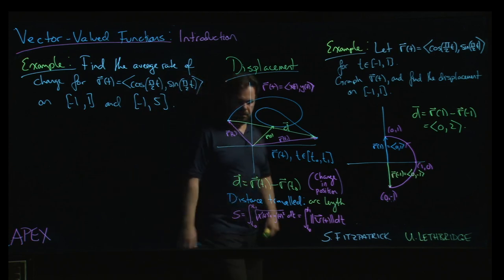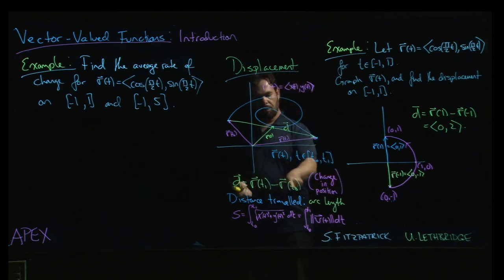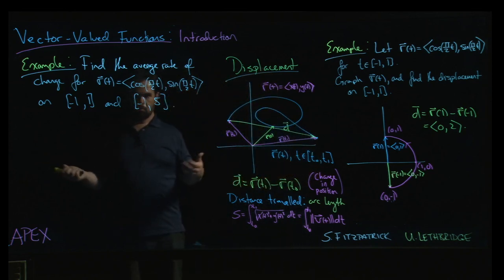Now, what do we mean by average rate of change? We have this concept of displacement here. It's the final position minus the initial. You can take that change in position and divide by the interval of time over which that change took place and you'll have an average rate of change.